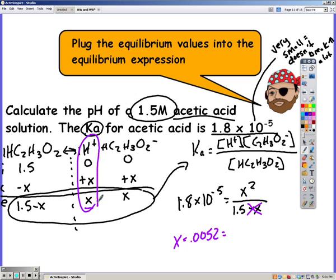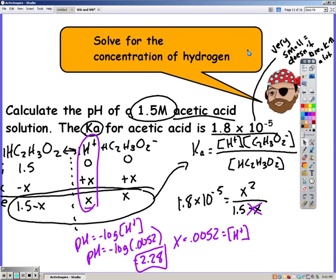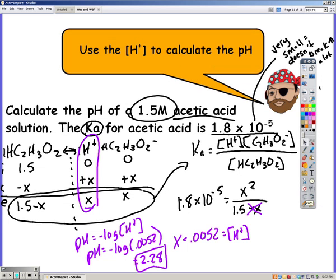I get my X to be 0.0052, which is the concentration of H. Now that I have my concentration of H, I can find my pH using the pH equation. So pH is equal to the negative log of 0.0052, which is 2.28. So we found our concentration of H, and then used the concentration of H to find the pH.